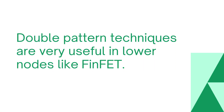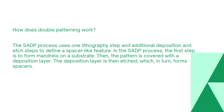Double patterning techniques are very useful in lower technology nodes like FinFET. There are three types of double patterning: self-aligned dual patterning, litho-etch litho-etch, and others. Self-aligned dual patterning is one of the most used lithographic processes. It uses additional deposition and etch steps to define features. The first step is to form a mandrel on the substrate, then cover the pattern with a deposition layer, which is then etched to form spacers. In FinFET fabrication, the most used technique is SADP — self-aligned double patterning.